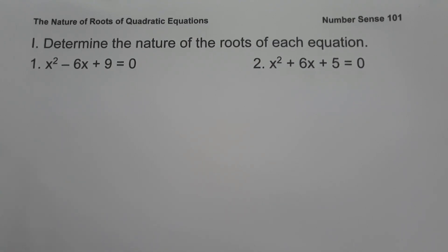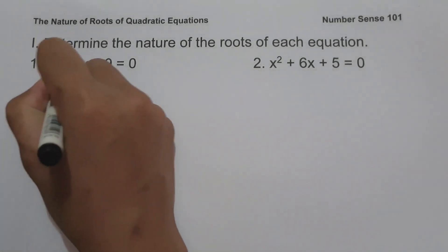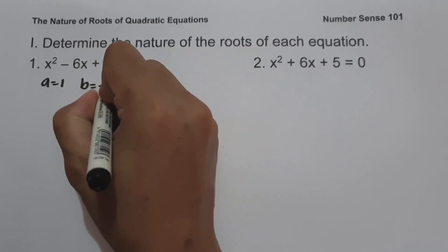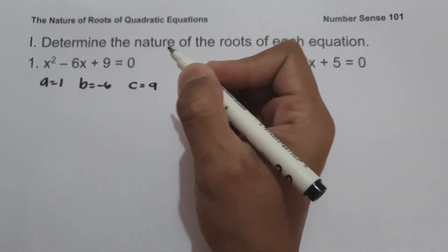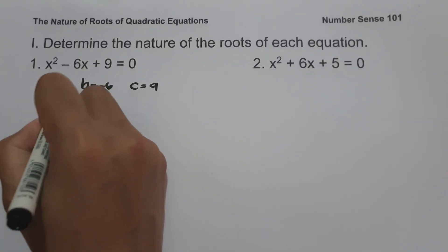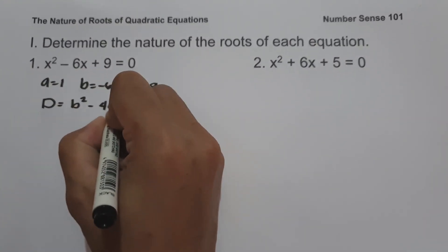Since the given equation is already written in standard form, let us identify the values of a, b, and c. So the value of a is 1, b is negative 6, and c is positive 9. And the formula for the discriminant is d equals b squared minus 4ac.